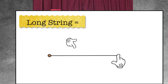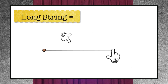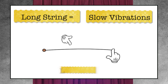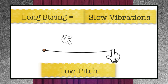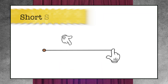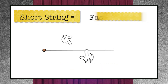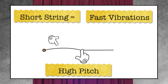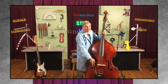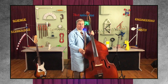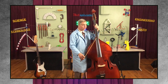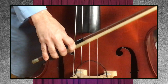Long string — and I pluck it — it's going to vibrate very slowly, and it will be a lower pitched sound. But if I shorten the string, the vibrations become much faster, and the pitch is higher. And I'm even going to use a bow, which will really get the string vibrating, and you can see it a little more clearly.